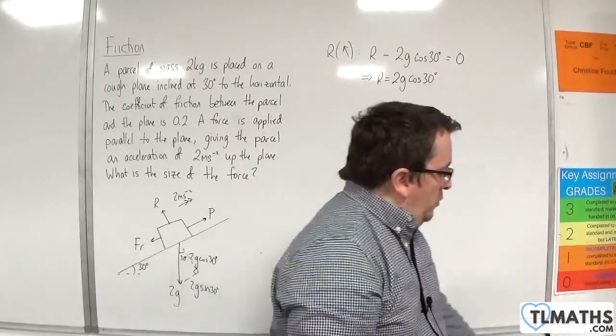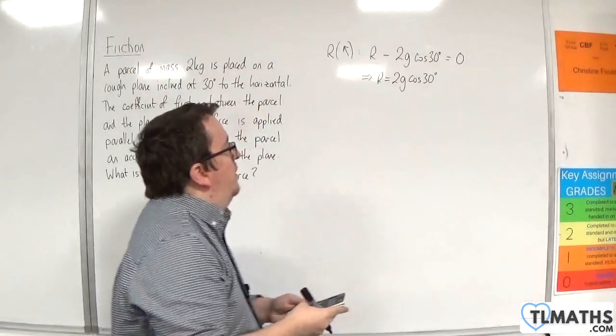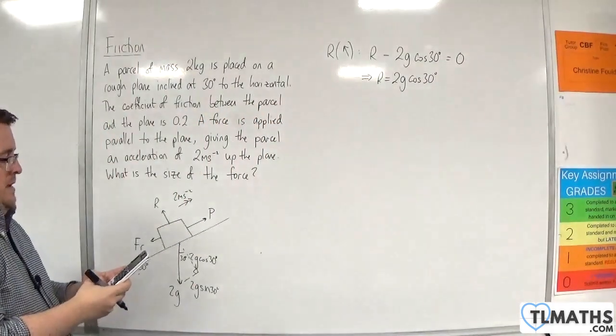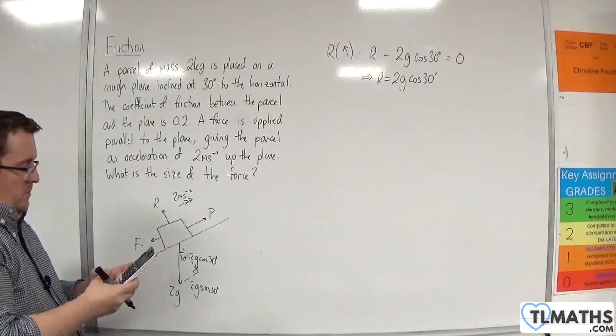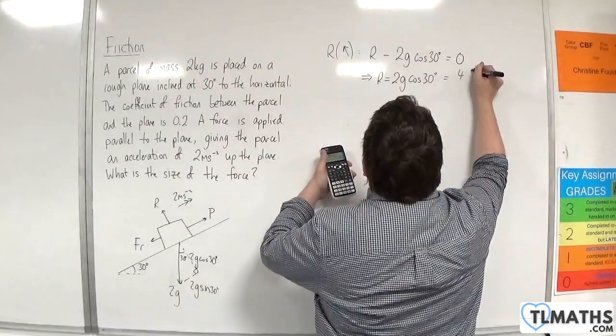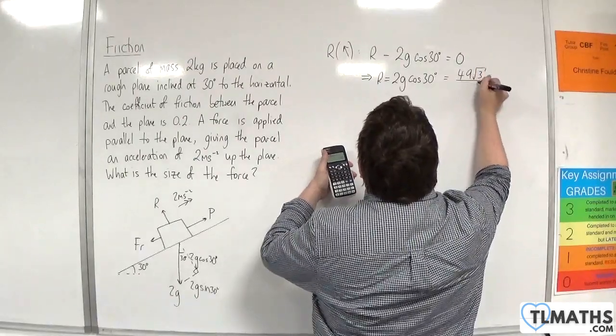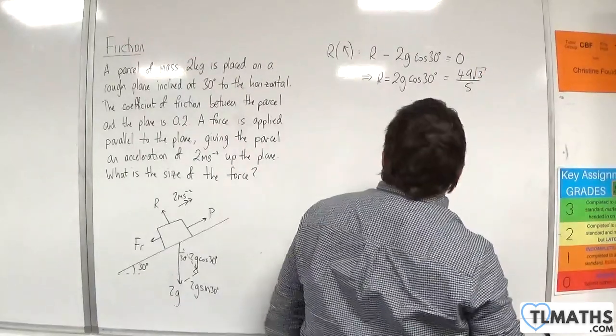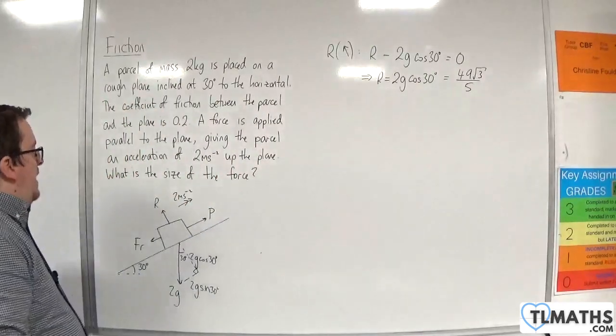I could put the g as 9.8 in here. I think I will. So that gets us 49 root 3 over 5. So that's R.